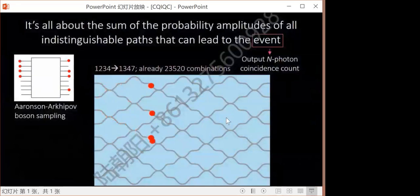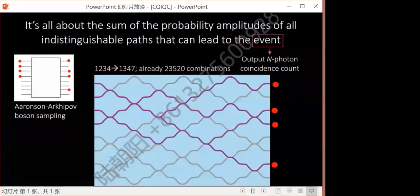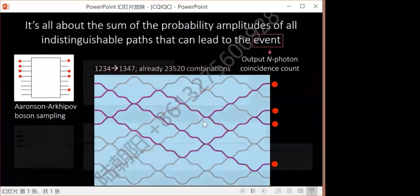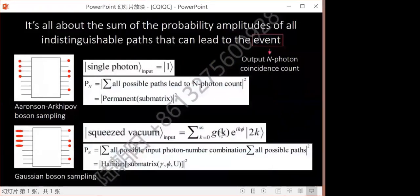How it works? In the original boson sampling, we can see that there are many possible paths that leads to a certain multi-photon sequence. For instance, from input 1234 to output 1347, there are more than 20,000 possible paths adding up together. In GBS, instead of using single photons as input, GBS uses squeezed vacuum. The squeezed vacuum is just a coherent superposition of different even photon number states with a fixed phase relation from k equal to zero, zero photons, two photons, four photons, six photons, and so on.